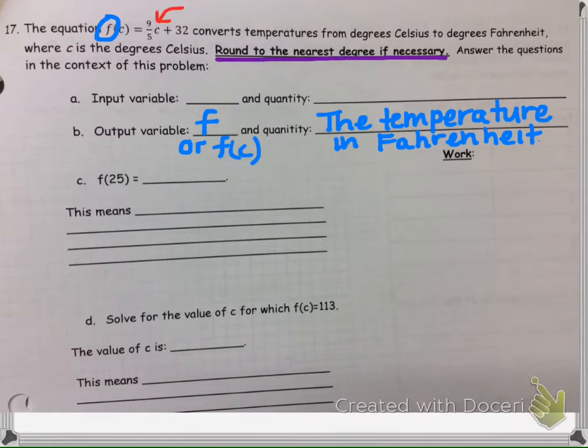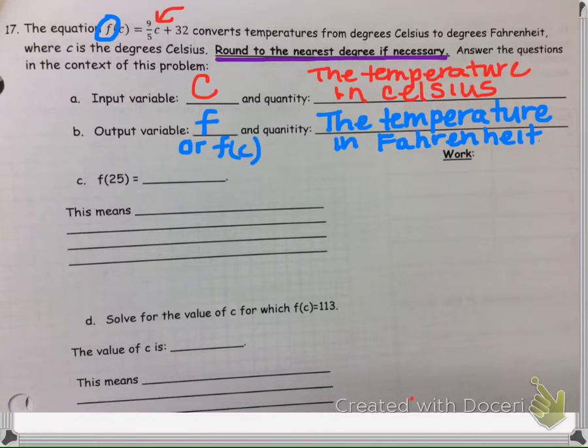Whereas the number over here, the C, the Celsius, represents the temperature in Celsius. So the C represents the temperature in Celsius, and F is the temperature in Fahrenheit.